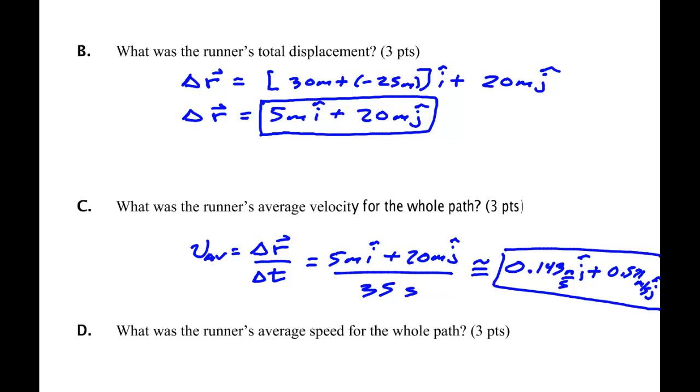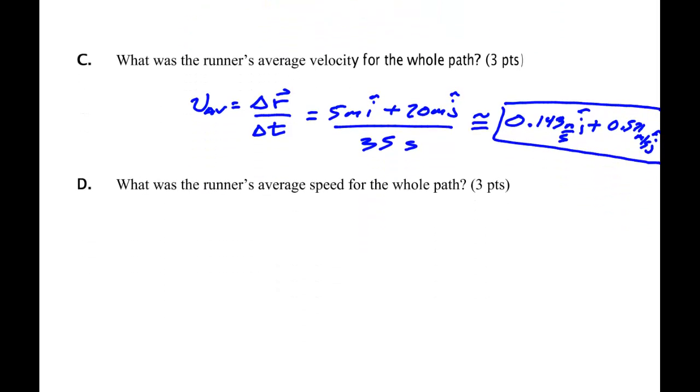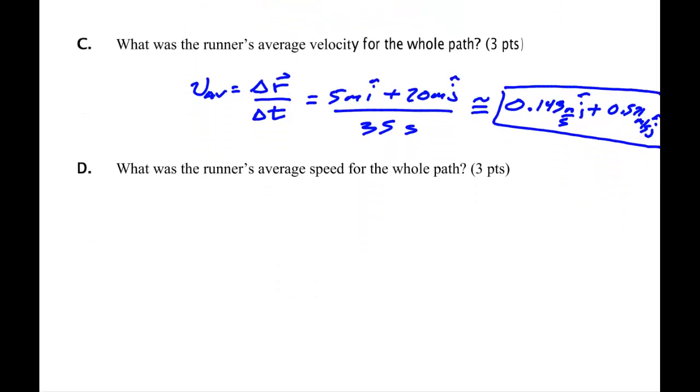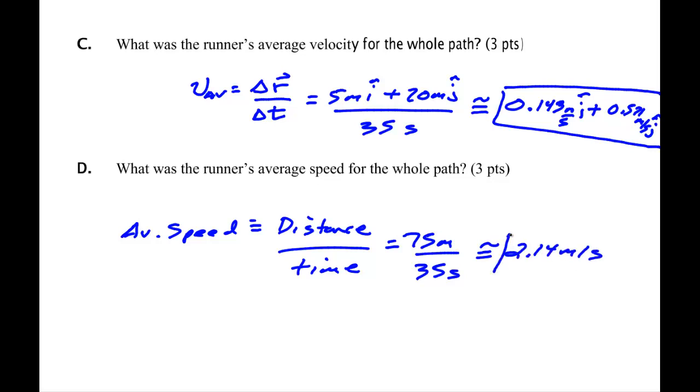What was the runner's average speed? Average speed is distance over time, 75 meters over 35 seconds, 2.14 meters per second. Alright, and so we'll finish the rest of the problems in the next video.